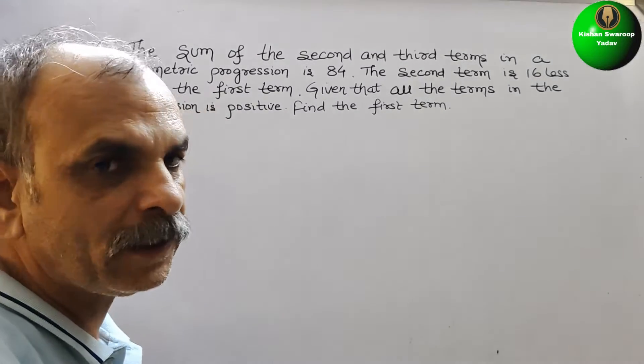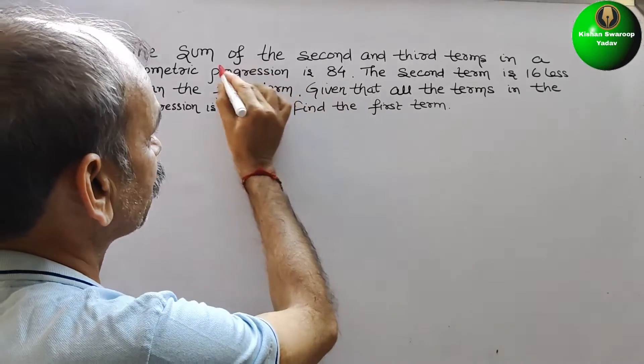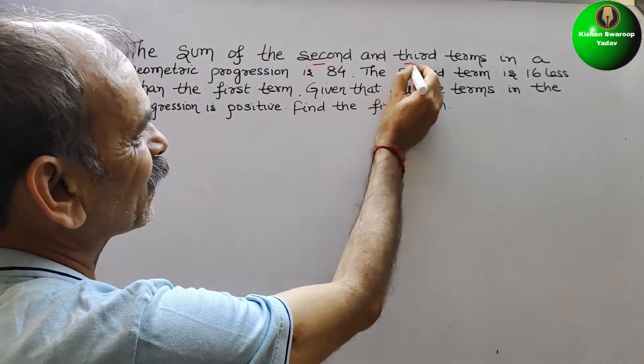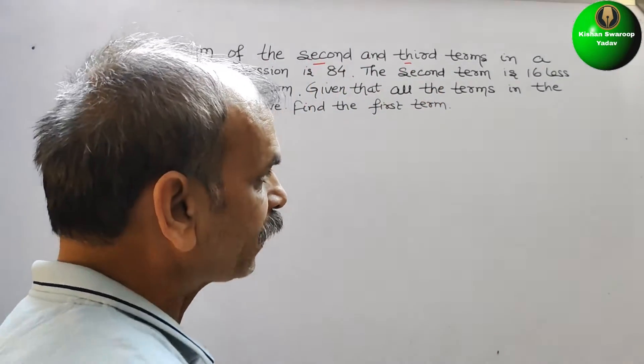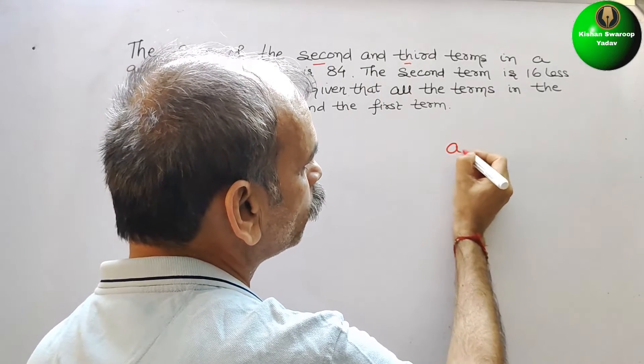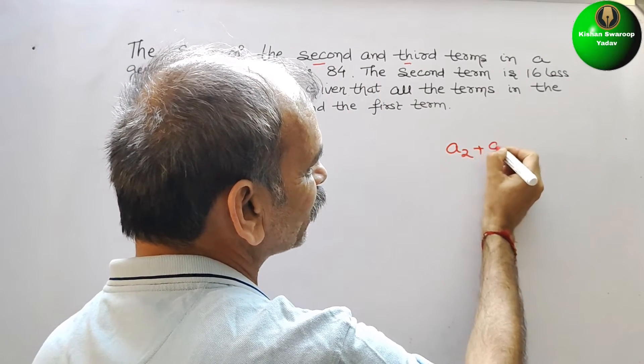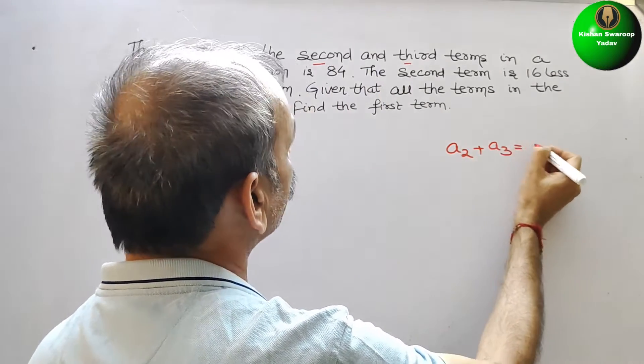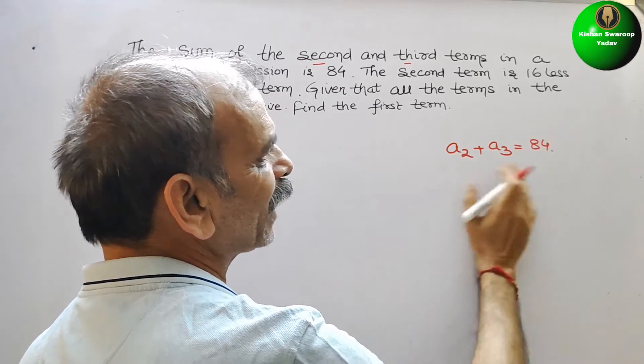So now what they have told, see that the sum of second and third term, that means a2 plus a3, that is equal to 84, they are given like that.